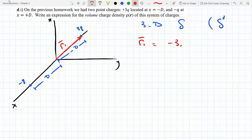It goes minus d in the x, zero in the y, and zero in the z. Likewise, I could call this from the origin to here r2. I know what r2 is: d in the x, zero in the y, and zero in the z.